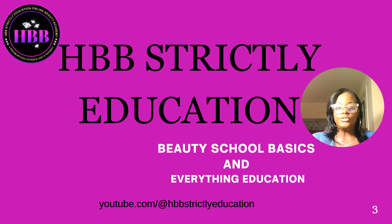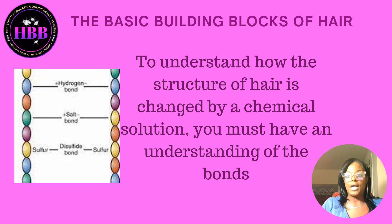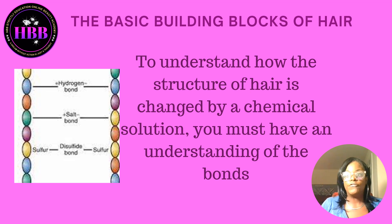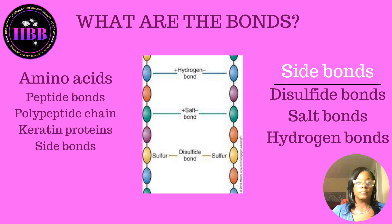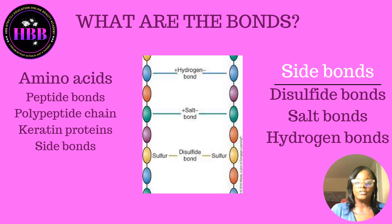Welcome back to the channel. Today we're still on chemical texturing, and we're going to focus on the bonds of the hair. To understand how the structure of hair is changed by a chemical solution, you must have an understanding of the bonds. We're going to focus on the salt bonds, hydrogen bonds, and the disulfide bonds. But first we need to talk about the building blocks: amino acids, peptide bonds, polypeptide chains, keratin proteins, and side bonds.